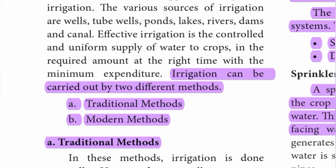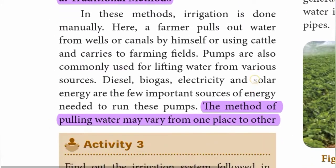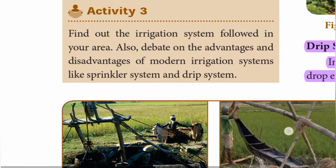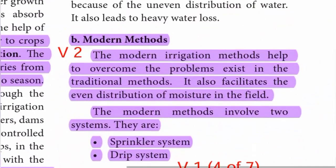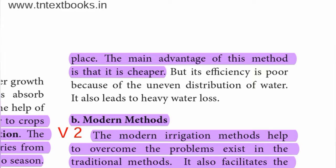Irrigation can be carried out by two different methods: A) Traditional methods and B) Modern methods. Under traditional methods, the method of pulling water may vary from one place to another. The main advantage of this method is that it is cheaper.